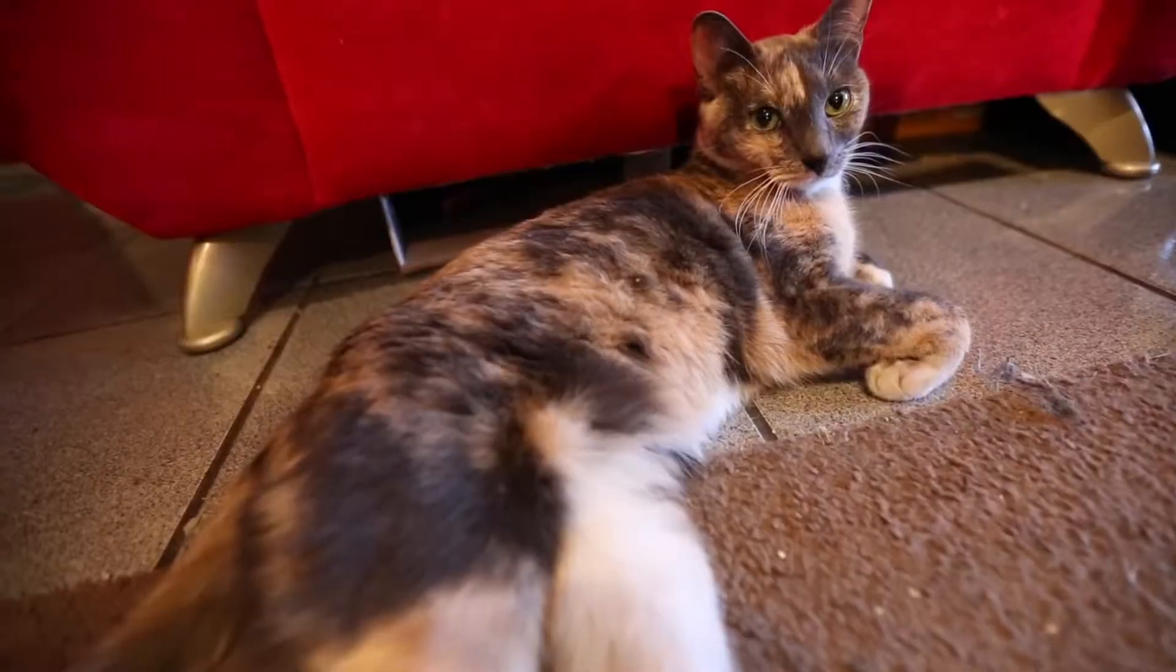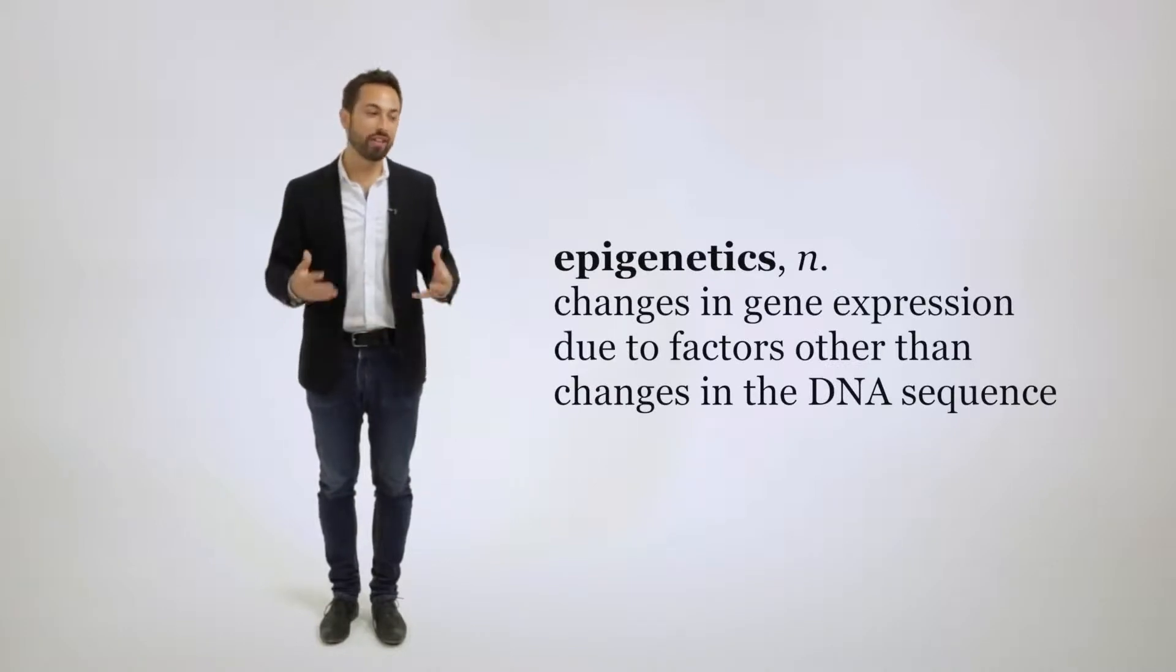And that's because only female cats can inherit two X chromosomes with two different color genes. Now this is just one really cool example of epigenetics, but epigenetics doesn't normally work on one whole chromosome. In fact, it's at play in all of your chromosomes turning on and off your genes.